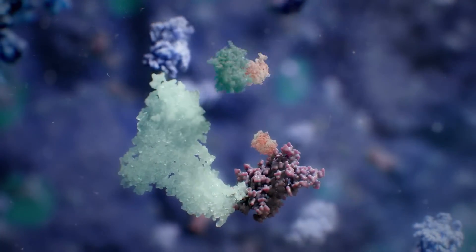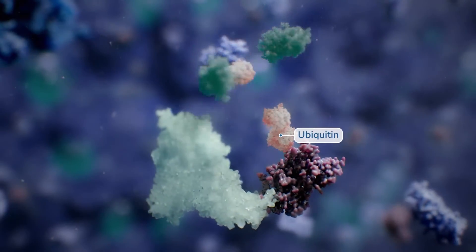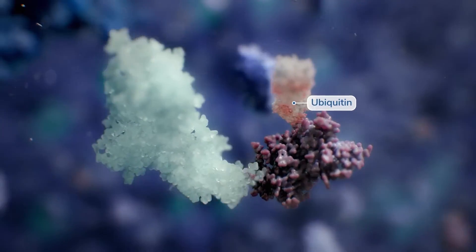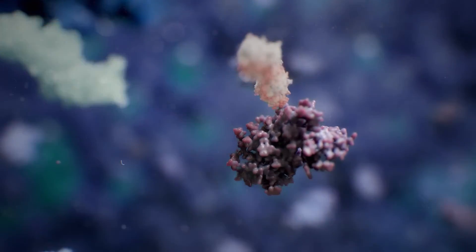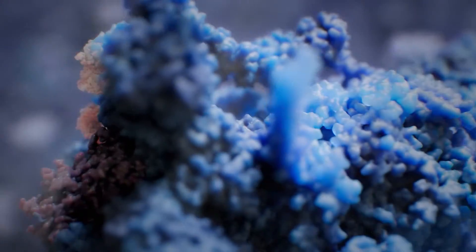The E3 ligase complex then attaches a chain of small proteins called ubiquitin, which marks them for degradation by the proteasome. This natural process occurs continuously to rid cells of defective or unneeded proteins.